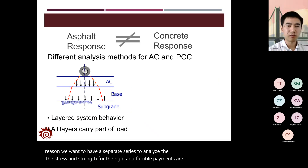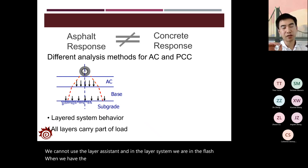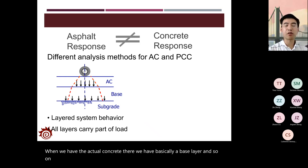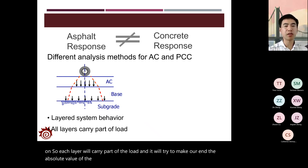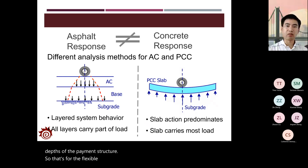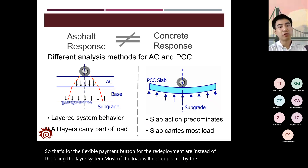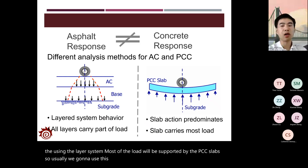For flexible pavements, we use a layer system with the asphalt concrete layer, base layer, subbase layer, and so on. Each layer carries part of the load, and the absolute value of the load reduces gradually at greater depths of the pavement structure. For rigid pavement, instead of using the layer system, most of the load is supported by the PCC slab through slab action to transfer load to the subgrade layer.